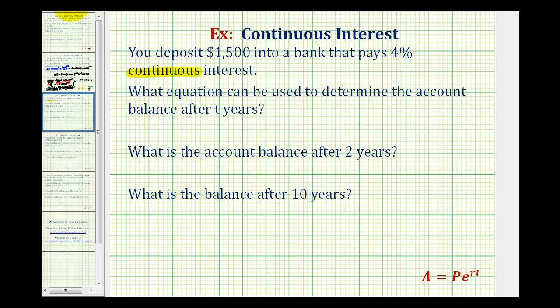The continuous interest formula is A equals P times E raised to the power of RT, where P is the principal or starting amount in the account, R is the annual interest rate expressed as a decimal, T is the time in years, and A is the amount after T years.